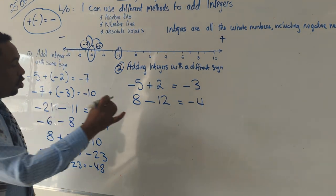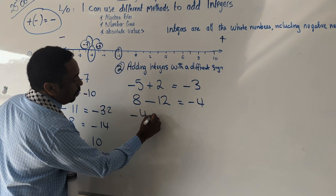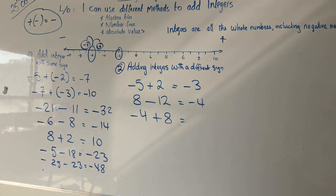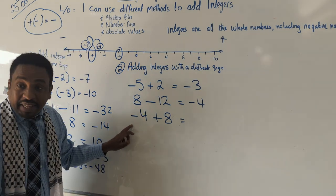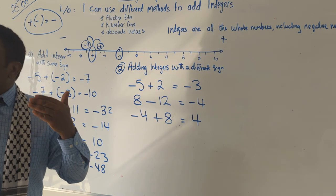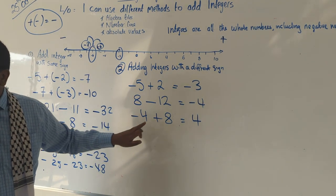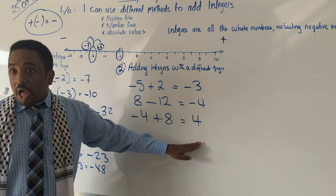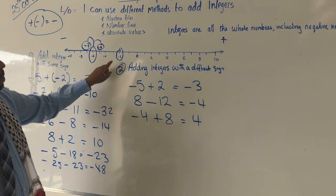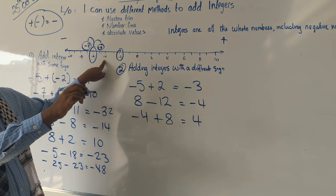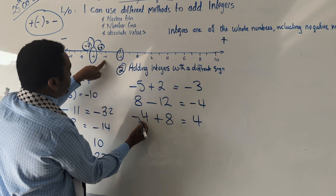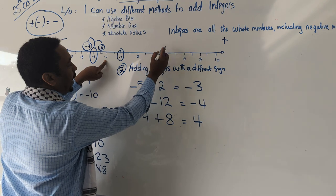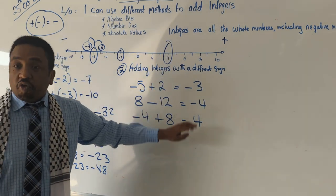Now let's do when the small number is carrying the negative. If you have minus 4 plus 8, the answer will just be 4, because the small number is carrying the negative, so the answer becomes positive. We can use the number line to prove it: start at negative 4, move 8 steps in the positive direction — 1, 2, 3, 4, 5, 6, 7, 8 — and we end up at 4. Correct!